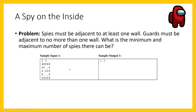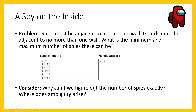The key ambiguity is that some people's roles aren't deterministic. Looking at the sample: the person in the middle has no adjacent walls, so they cannot be a spy. The person in the top left is adjacent to two walls — one up and one left — so they cannot be a guard, meaning they must be a spy.